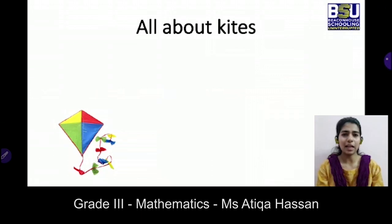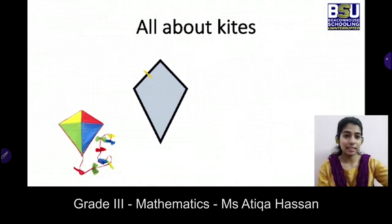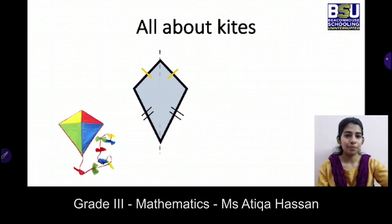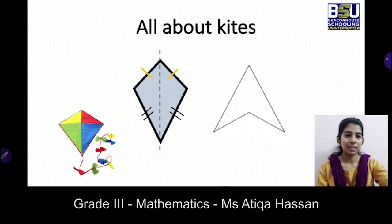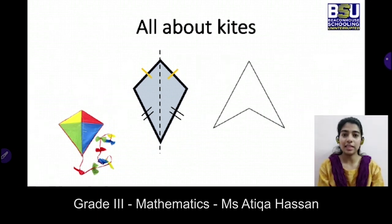Coming to kites — a kite is a quadrilateral which has two pairs of sides of equal length. The first side is equal to the adjacent side, and the other pair is likewise equal. This creates a line of symmetry. When we stretch one end to greater than a 180-degree angle, it makes a dart shape — D-A-R-T, dart. The angle greater than 180 degrees is known as a reflex angle.